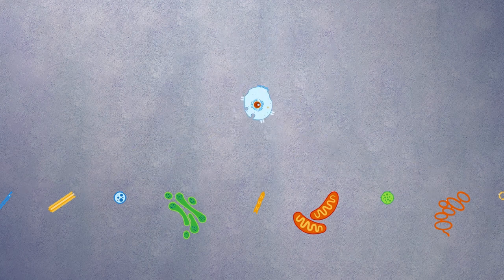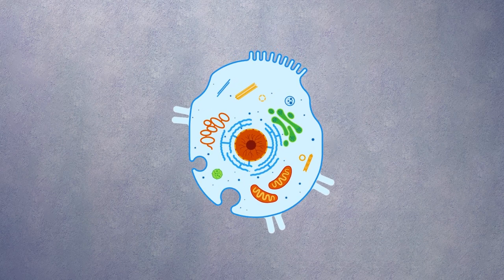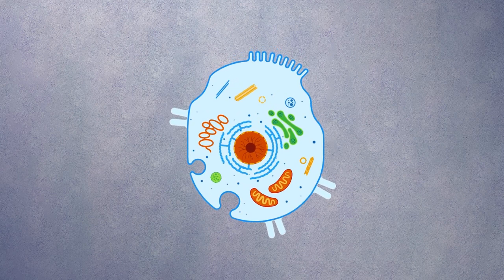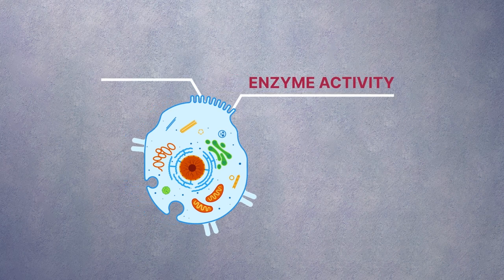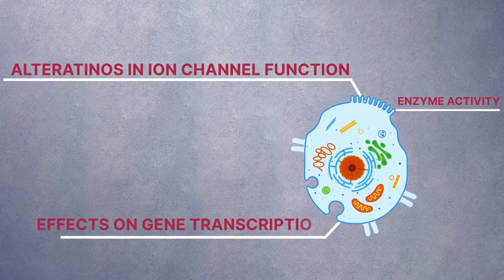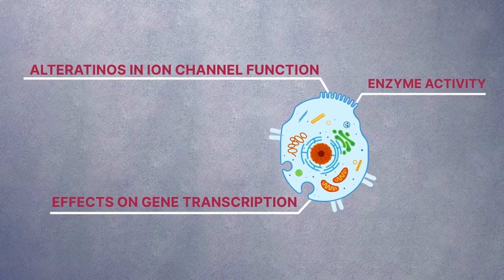Post-receptor effects. After binding to its receptor, a drug can initiate a cascade of biochemical events inside the cell. These include changes in enzyme activity, alterations in ion channel function, and effects on gene transcription, all of which contribute to the drug's overall effect.